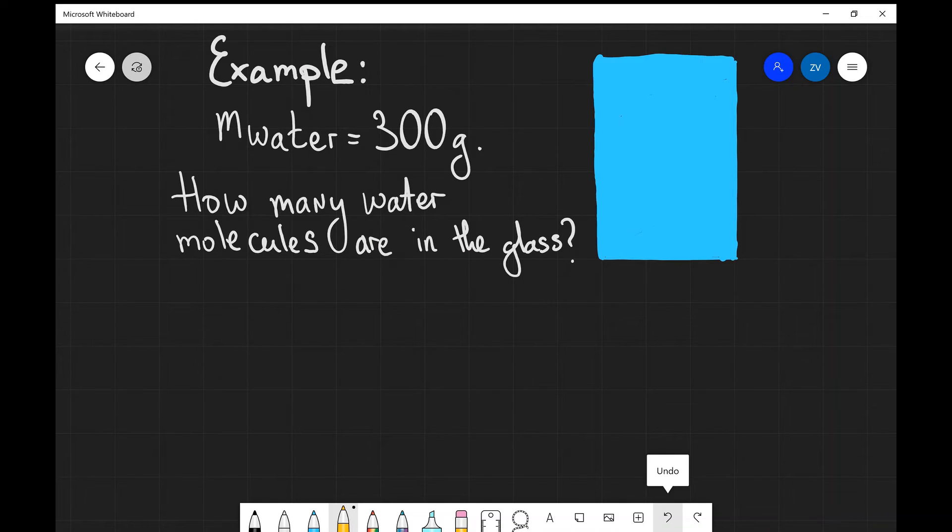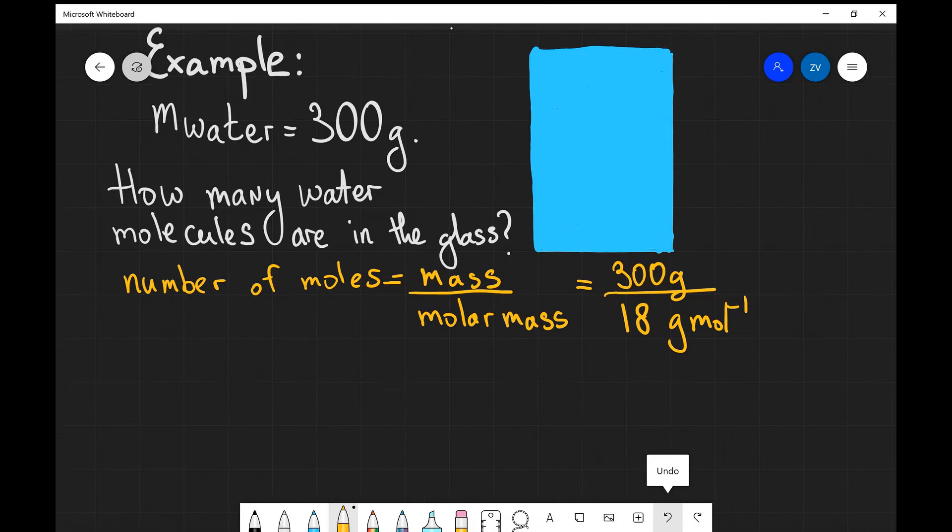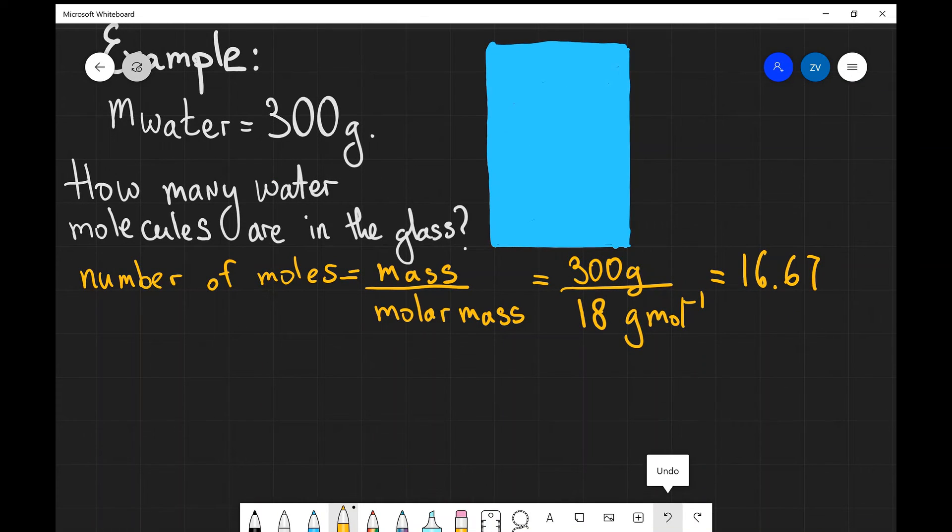The first thing that we need to find out is the number of moles. And if you remember, the number of moles are actually equal to the mass divided by the molar mass. The mass of water in this case is 300 grams, and we're going to divide that by the molar mass of water, which is 18 grams per mole. This gives us about 16.67 moles.